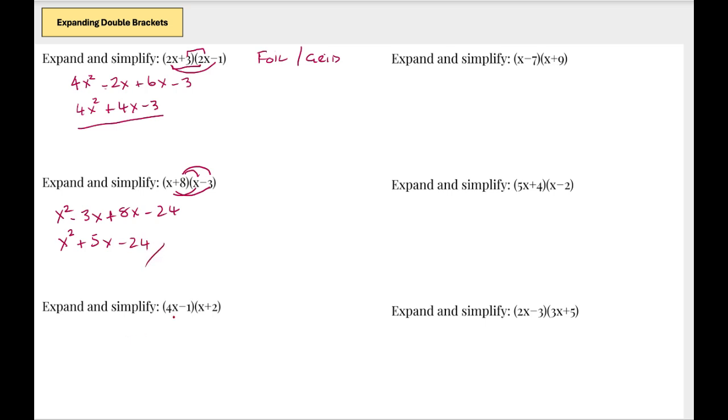Next one, 4x times x is 4x squared, 4x times 2 is plus 8x, minus 1 times x is minus x, and minus 1 times 2 is minus 2. Same again, biggest at the front, plus 8x minus x is plus 7x minus 2.